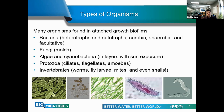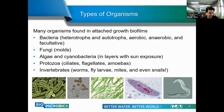Moving up the food chain, biofilms and attached growth systems support a large number of protozoa — including ciliates, flagellates, and amoebas — which like to consume bacteria. At the largest scale, attached growth systems can harbor actual animals including invertebrates like worms and fly larvae, and even snails in some systems, which eat the slime on the media. Examples shown include electron scan images of bacteria, a mold fungus, blue-green algae (cyanobacteria), a ciliated protozoa, and a nematode.